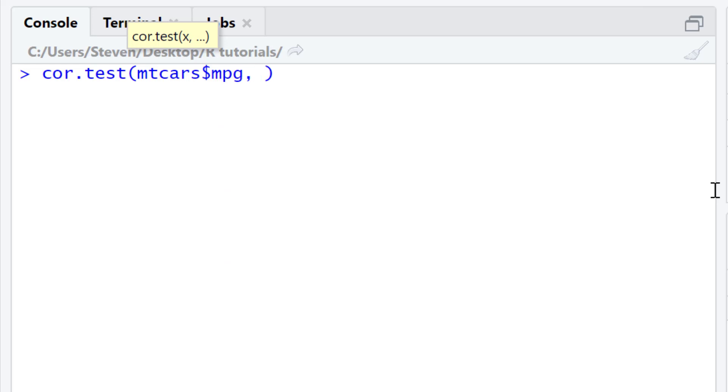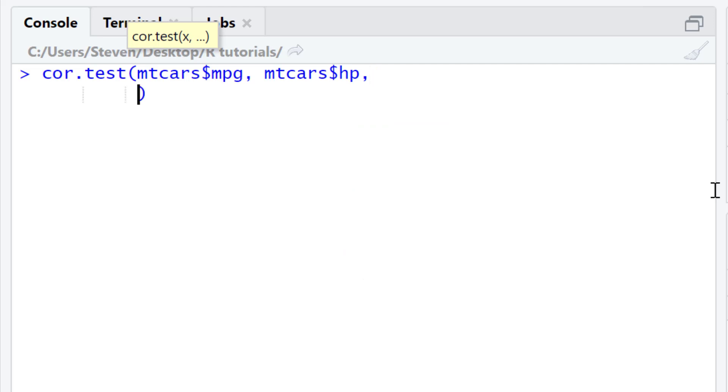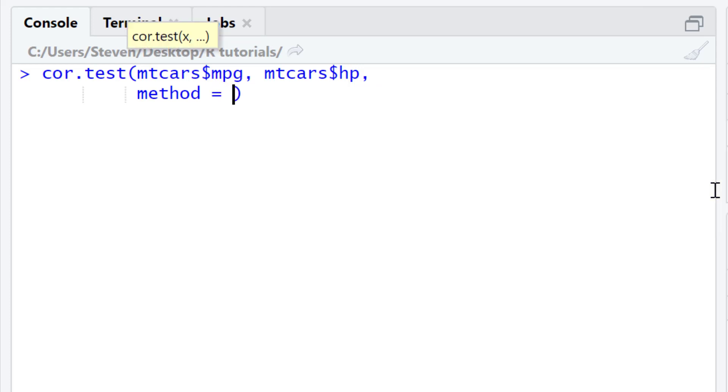Enter a comma, and then I need to enter the second variable. So again this is mtcars, dollar sign hp, which is horsepower. Next you want to add another comma, and you need to type in the argument method, equals, and then speech marks, and within the speech marks, you need to type in Spearman.